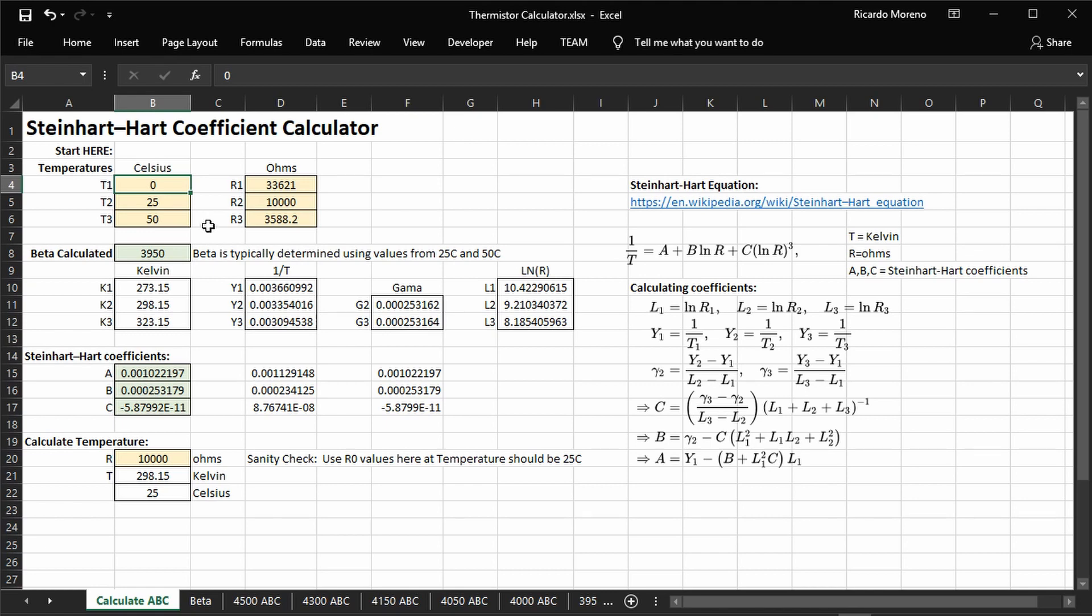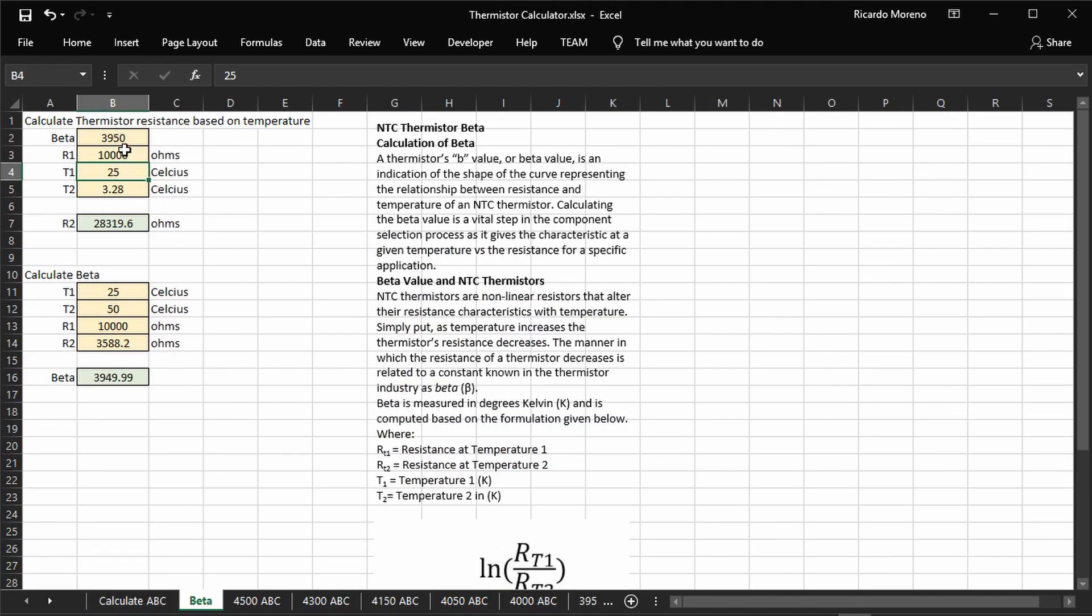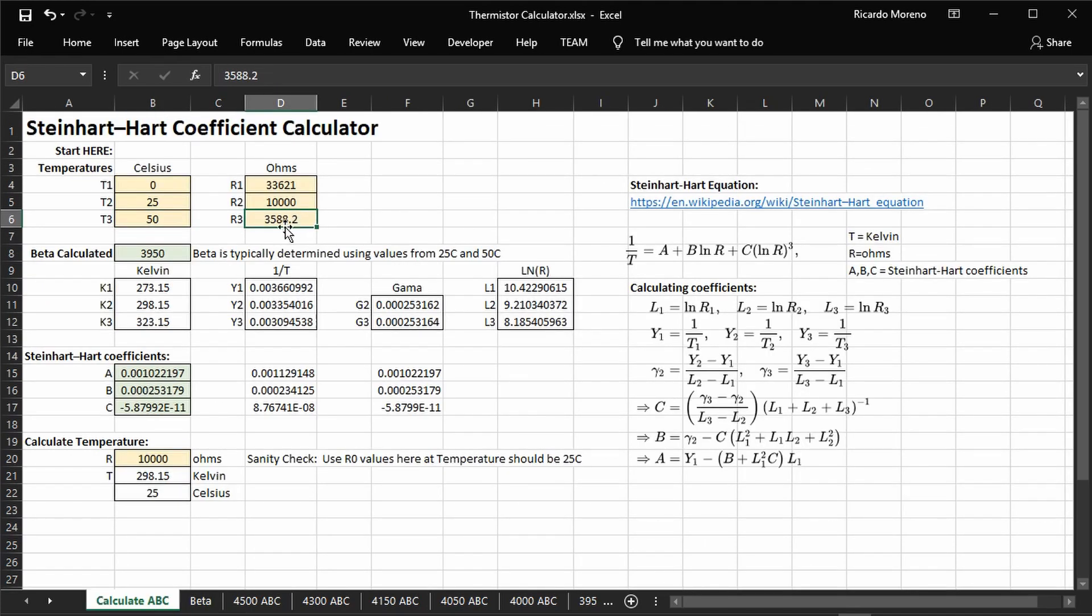So to get the 50 degrees what I did was I kind of cheated. I used the beta calculator using what we believe is the beta value for this particular thermistor and the resistance at 25 degrees Celsius which would be the first temperature value. And then we would come up with the second temperature value and then it results in a resistance value of 3588.2. And then I would plug in the 3588.2 as the third resistance value. Now then it would calculate the beta value based on these numbers. It runs through the different calculations for making all these different constant values for the equation and then it finally results in the ABC coefficients that I can use for our equation in the Arduino sketch.